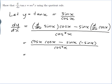So the top would be cos squared x minus sin x times minus sin x would be plus sin squared x all on cos squared x.